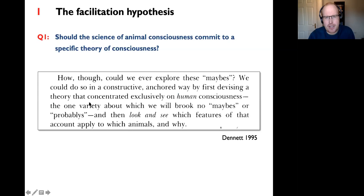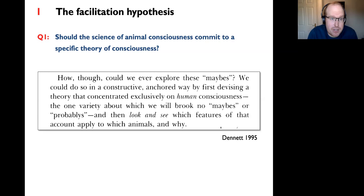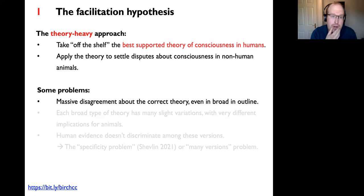Should the science of animal consciousness commit to a specific theory? Dennett advocated for that in a 1995 paper, asking how we turn animal consciousness research into a science rather than speculation. He said we could do so 'in a constructive, anchored way by first devising a theory that concentrated exclusively on human consciousness—the one variety about which we will brook no maybes or probabilities'—implicitly because humans can verbally report their experiences—and then look and see which features of that account apply to which animals.